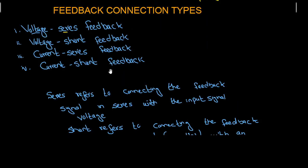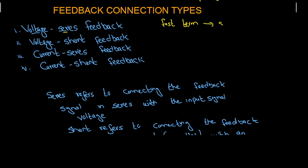Because both voltage and current can be fed back to the input either in series or parallel, we have four types of feedback connection topologies: voltage-series feedback, voltage-shunt feedback, current-series feedback, and current-shunt feedback. The first term indicates the type of sampling.